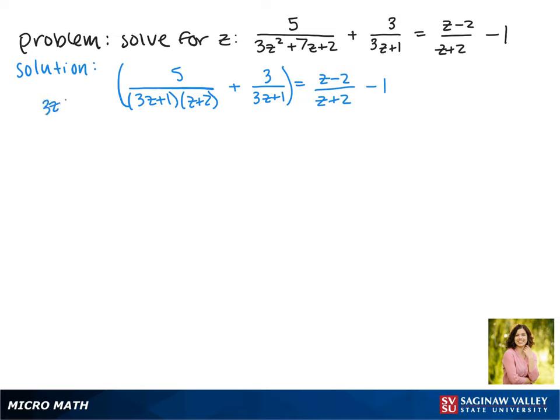We're going to multiply both sides by (3z + 1) and (z + 2) since that will get all of our denominators to cancel. And of course we have to do it on both sides.